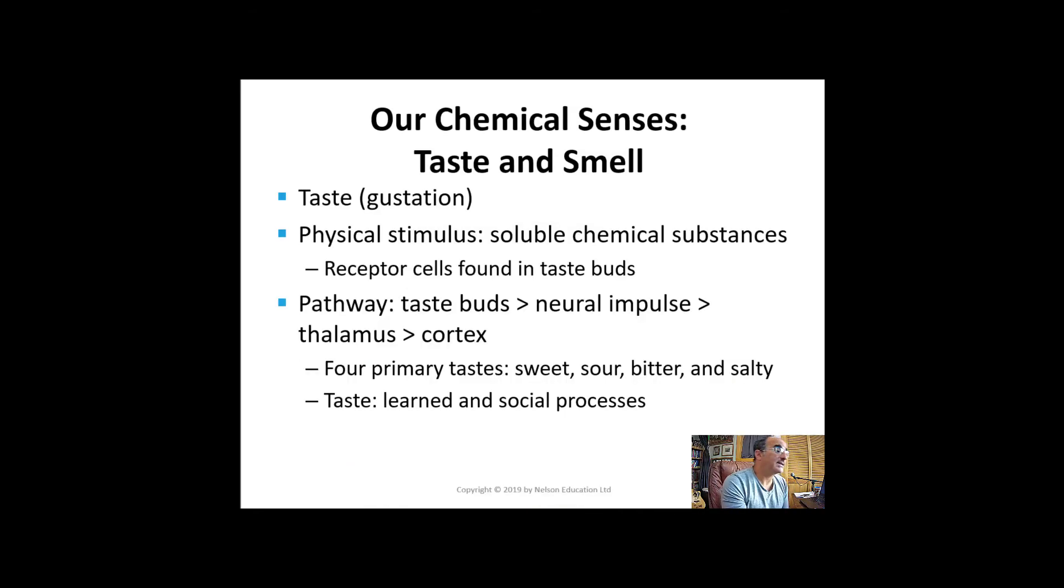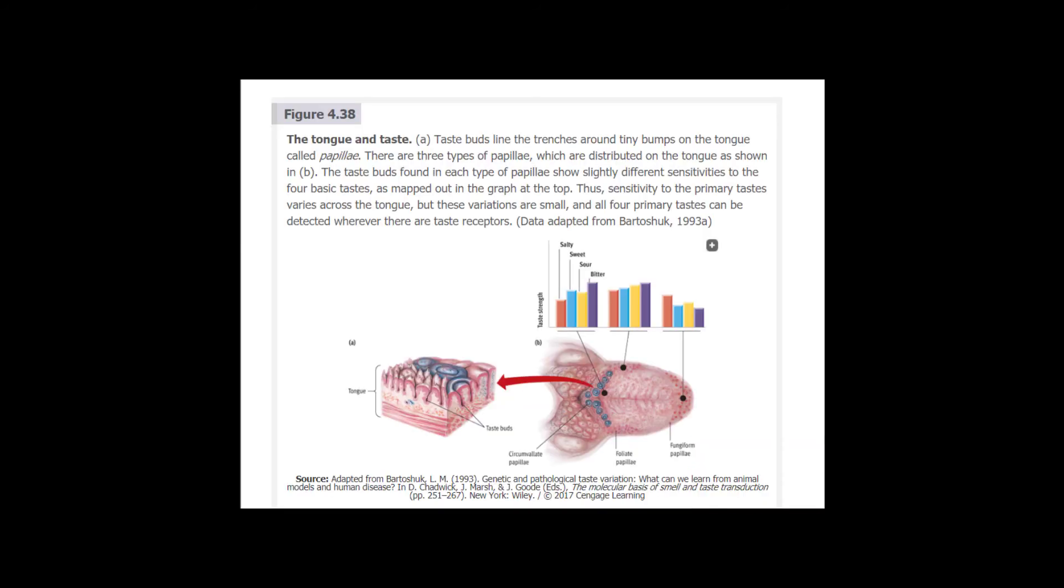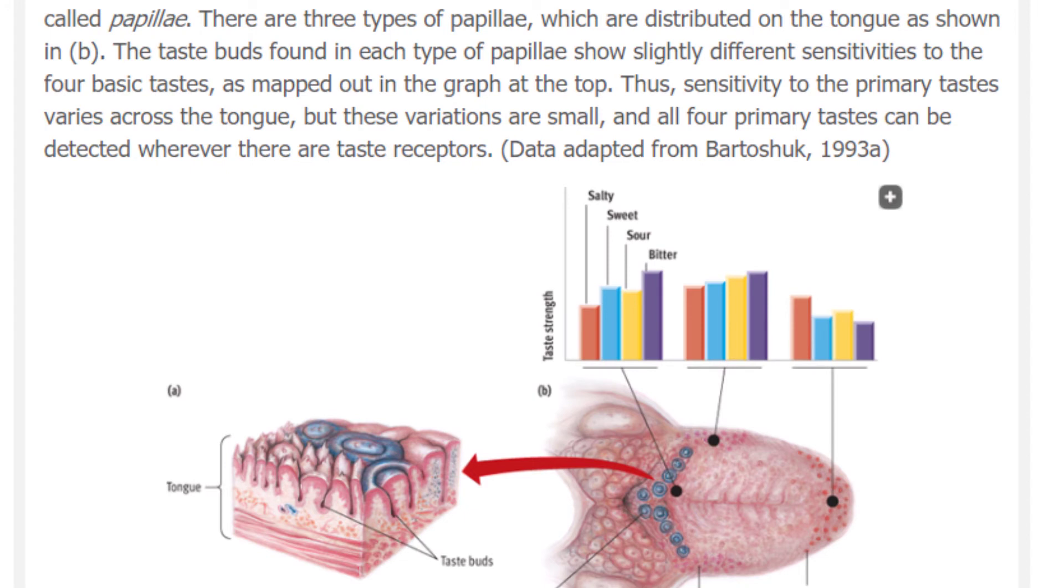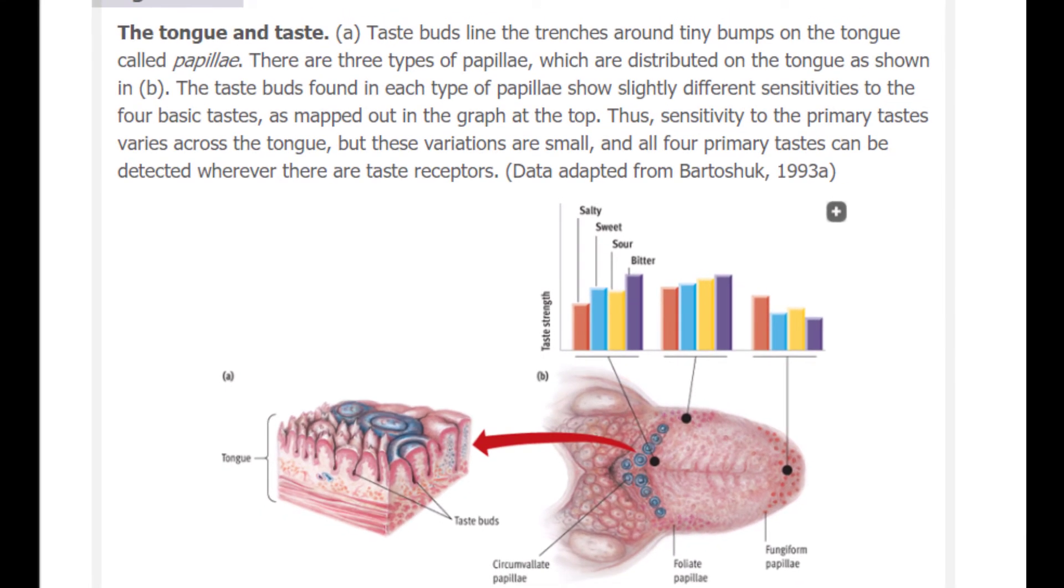Now let's look at taste and smell. Taste has its physical stimulus: chemical substances that are dissolved in water. Receptors for taste are clusters of cells found in the taste buds which line the trenches around tiny bumps on the tongue. These cells absorb chemicals, trigger neural impulses, and send information through the thalamus onto the cortex. The four primary tastes are sweet, sour, bitter, and salty with uneven distribution throughout the tongue. Clearly taste results from a complex blend of these four as well as our learned and social processes.